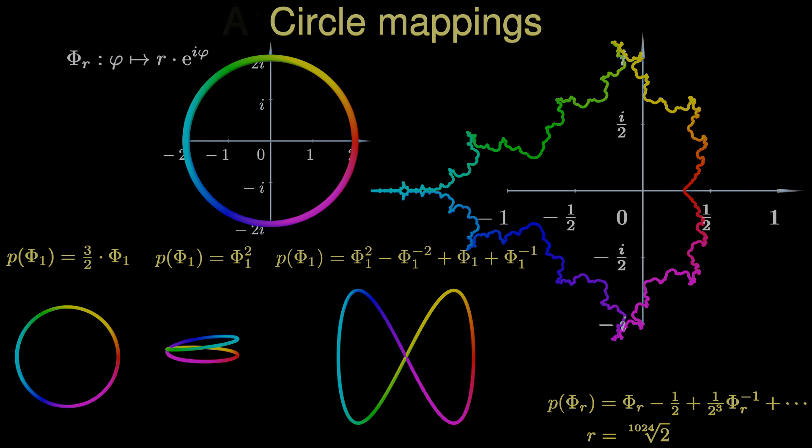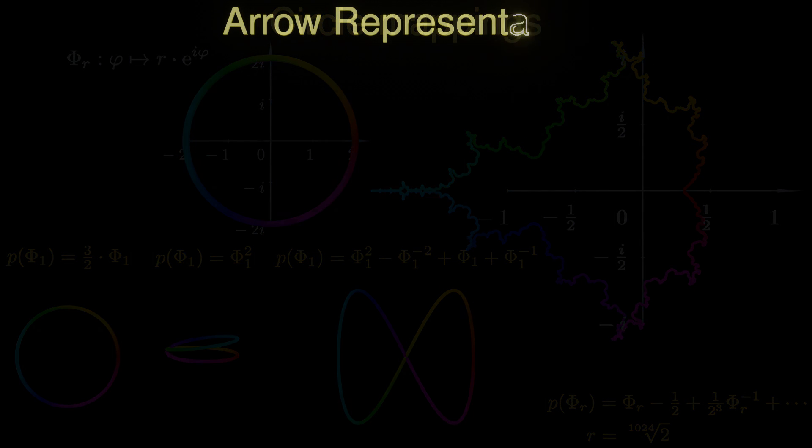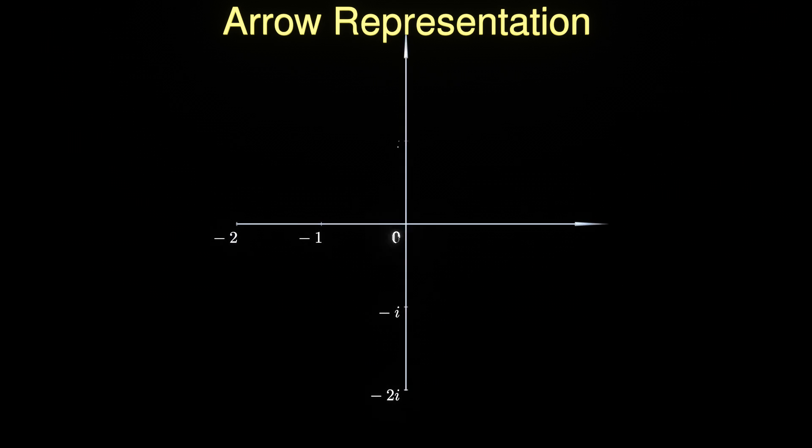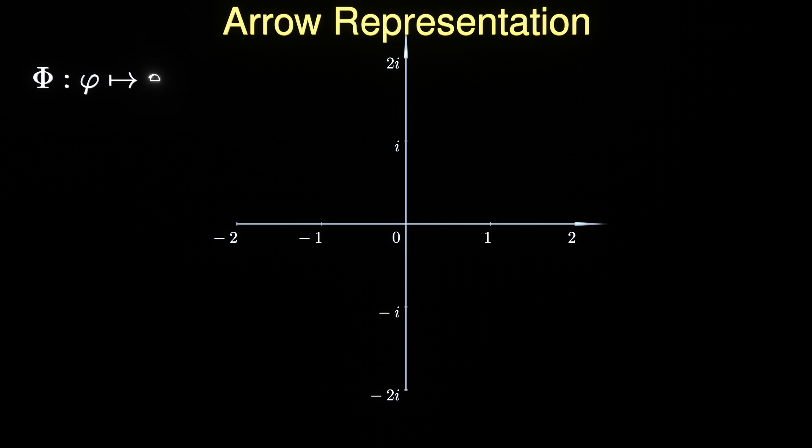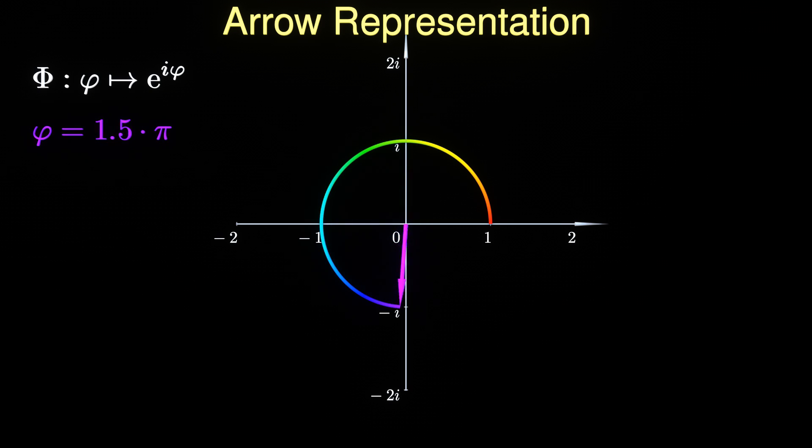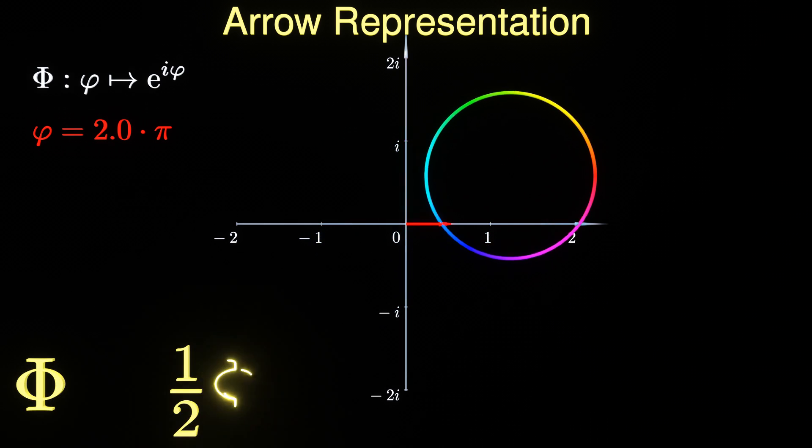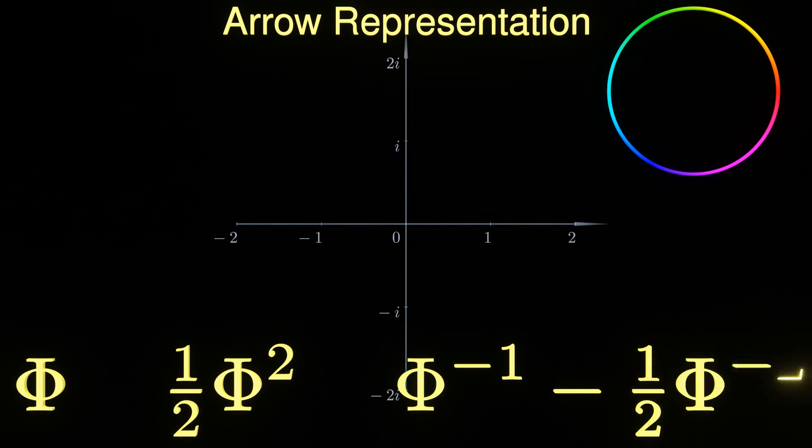We can understand the mapping of the circle that is provided by the polynomials in yet another way. For each possible value of the angular coordinate φ, you can imagine an arrow that is rotated against the real axis by this particular angle. As φ varies from 0 to 2π, the tip of the arrow exactly draws the circle that is represented by the exponential function with a pure imaginary argument.